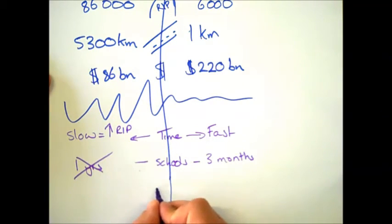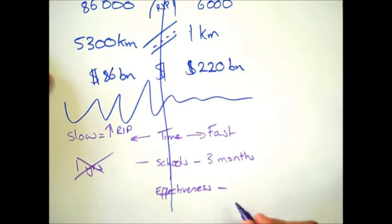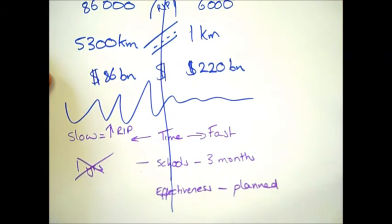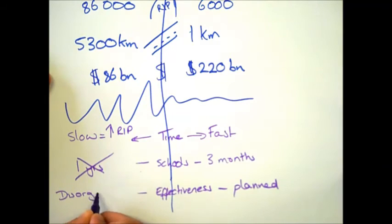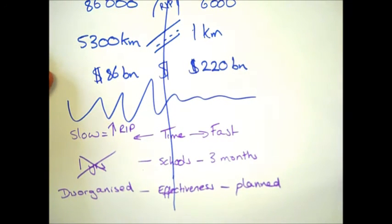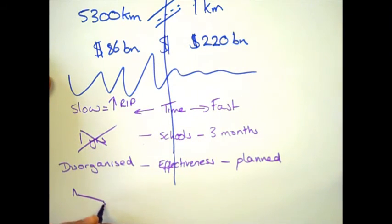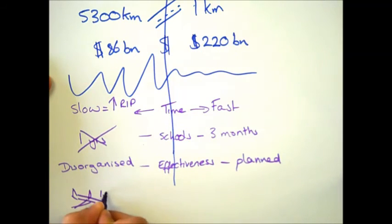Looking at the effectiveness of the response in more detail: Kobe, with its wealth, had well-trained emergency services and was planned for such a natural disaster. In contrast, Sichuan's lack of wealth resulted in a disorganised response, primarily through the army, who were not well-trained, didn't have the equipment to deal with the disaster, and it was much, much slower. Also in Sichuan, they relied heavily on the provision of international aid, which takes time to arrive, lengthening the response time. Whereas in Kobe, a rich country, they were able to deal with the problem themselves.